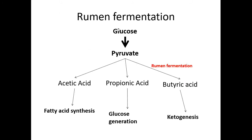In the rumen, there are ruminal microbes — archaeobacteria or fungi. These microorganisms carry out anaerobic glycolysis, where glucose converts to pyruvate inside the ruminal microbes. This pyruvate then converts to acetic acid, propionic acid, or butyric acid depending on the kind of microorganism present. Some groups convert pyruvate to acetic acid, some to propionic acid, and some to butyric acid.